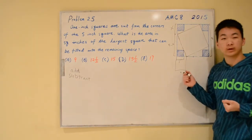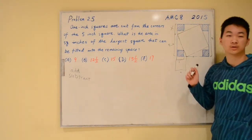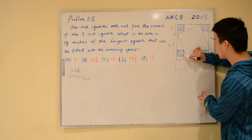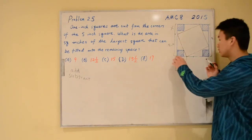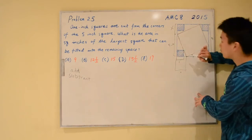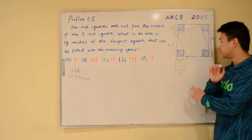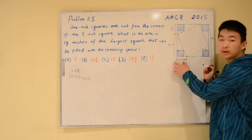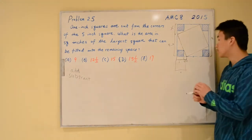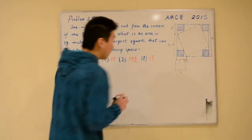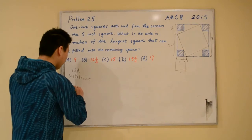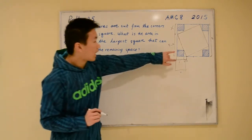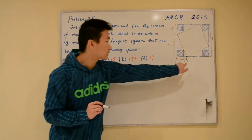We don't yet have an equation, so when working with triangles, you generally want to look for similar triangles. We can look at this tiny triangle here — it's similar to the big triangle. The height of the small triangle is 1, since it equals the side length of the cut square. The base of the small triangle is x minus 1. Now we can create an equation: the height over base of the big triangle equals the height over base of the small triangle, so (5 minus x) over x equals 1 over (x minus 1).